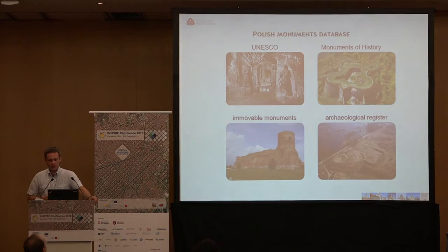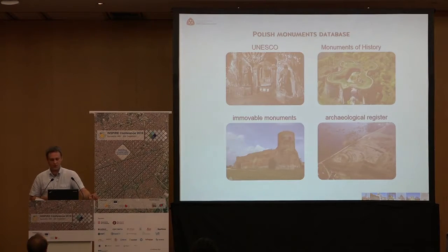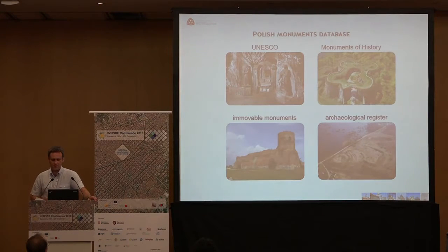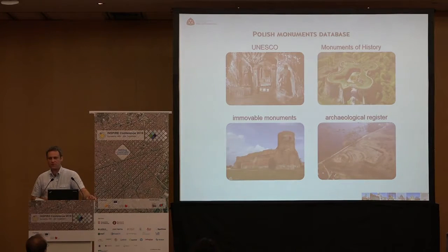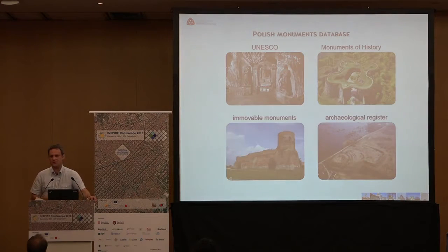The basic component parts of Poland's geospatial database are four data series. The first one comprises objects entered into the UNESCO World Heritage List. The second group is monuments of history — the special category of the 60 most important historical objects in Poland established by the Monument of History Protection Act. The third data series is Immovable Monuments, traditionally including architecture, urban complexes, rural complexes, and other historical structures. The fourth data series is archaeology — for example, earthworks and settlements.